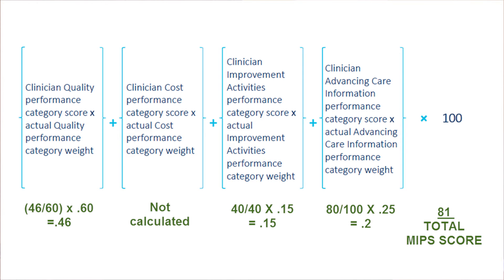You will repeat this process for each category, add up all the parts, then multiply by 100. This will be your MIPS composite performance score.